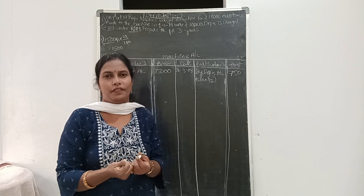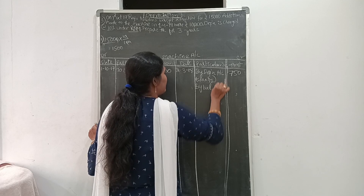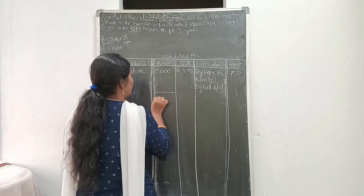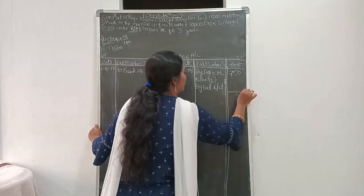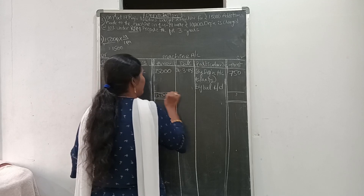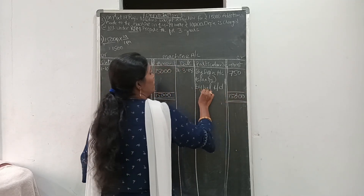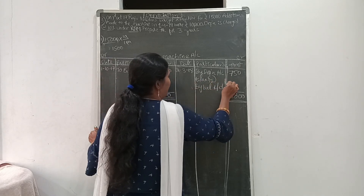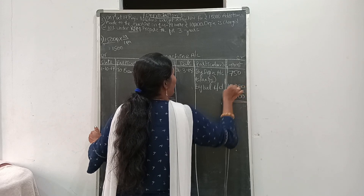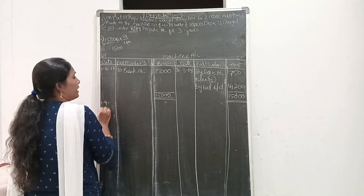Now find the balance amount — balance carried down. Close the account. Both sides total 15,000. Balance = 15,000 minus 750 = 14,250. This 14,250 is brought down to the next year.